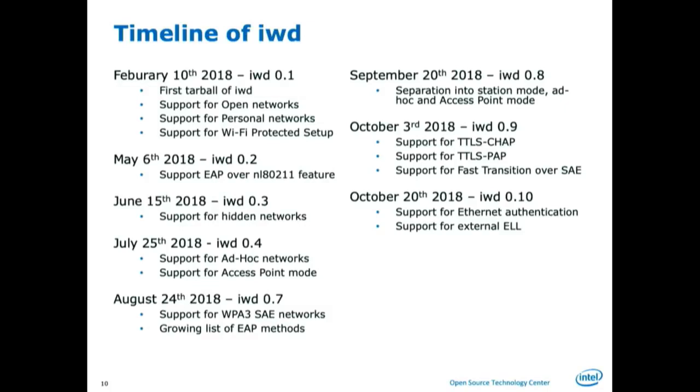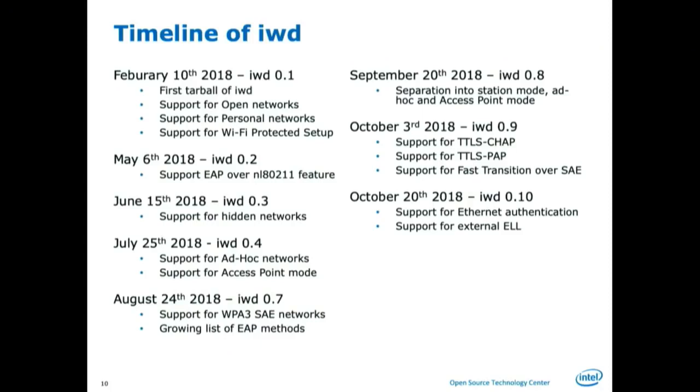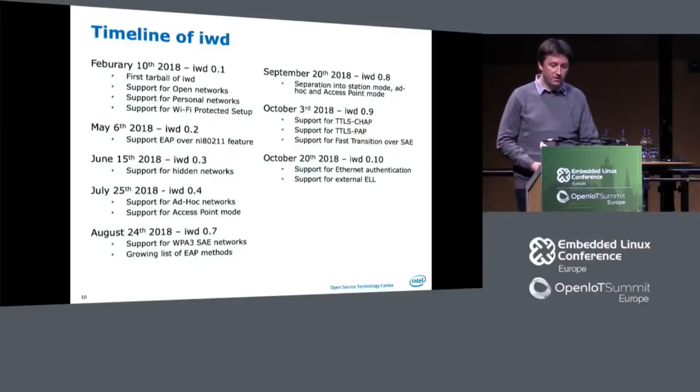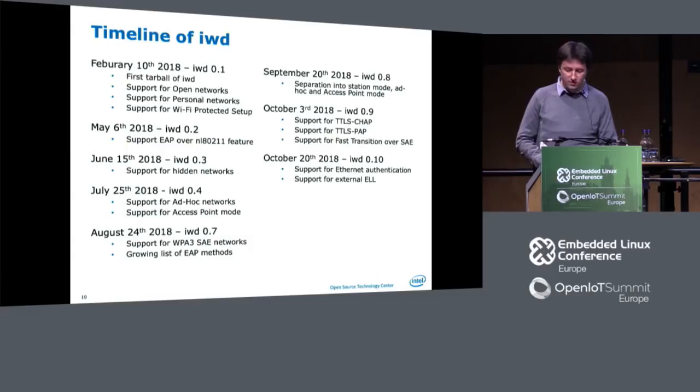We also got fast transitioning for roaming with WPA3 working at the beginning of this month. A couple of days ago I did another release — we go from 0.10 rather than 0.9 to 1.0 until we have everything ready. We now have an Ethernet authentication daemon as well. And finally, this is the first version that builds with an external ELL — the Embedded Linux Library, a replacement for glib that's really small and more dedicated for implementing a daemon. Previously, ELL was always baked into the IWD source code; now you have the choice to use the built-in internal one or compile against an external one.